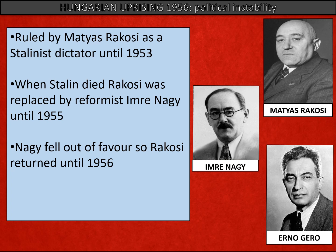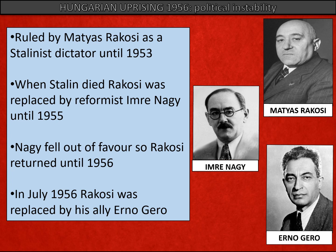When Nagy fell out of favour, Rukosi returned — all of this with Moscow's backing; there was intervention all the way through from Moscow. But Rukosi was again increasingly unpopular, so in July 1956 he was replaced with his ally, another hardliner called Erno Gero.